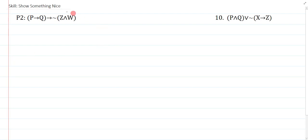Let's take a look at the left column first. We'll do two examples today. I'm pretending that this is premise two: P arrow Q arrow negation bracket Z and W close bracket.